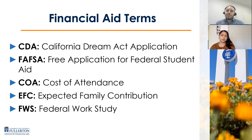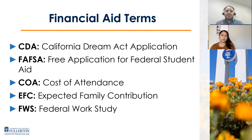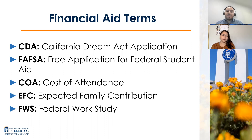Next we have FAFSA — a more common term students are familiar with — which stands for the Free Application for Federal Student Aid. Next, we have Cost of Attendance, typically referred to as COA, which refers to the overall budget students have when they attend CSUF, depending on their status as a commuter, a student who lives on campus, or one living off campus. We'll show you an example of what a cost of attendance looks like. Next, we have EFC — Expected Family Contribution — a number generated after a student inputs all their information on either the California Dream Act application or FAFSA. This is a very important number because it helps us understand your family's financial strength and what forms of financial aid we could potentially offer you at CSUF.